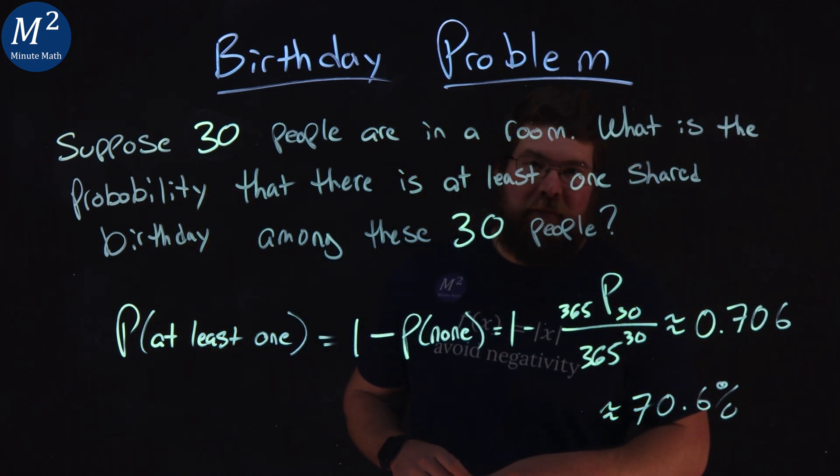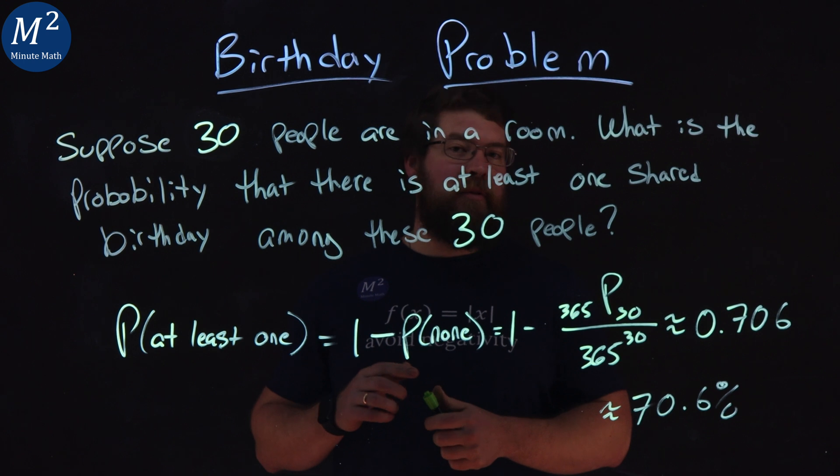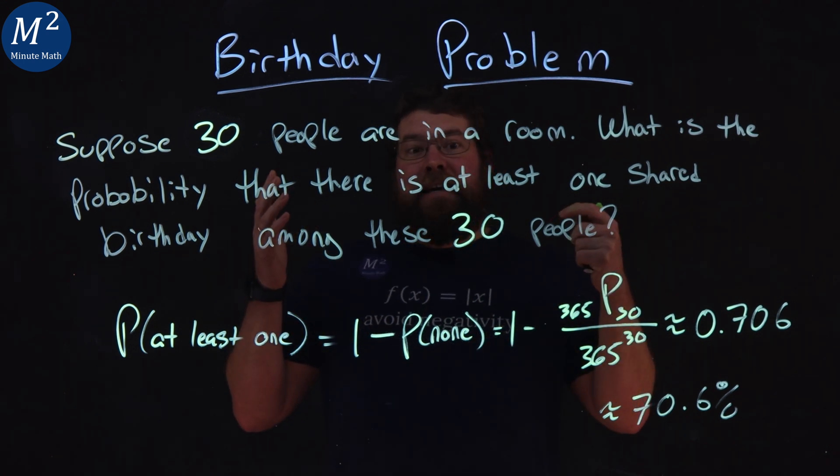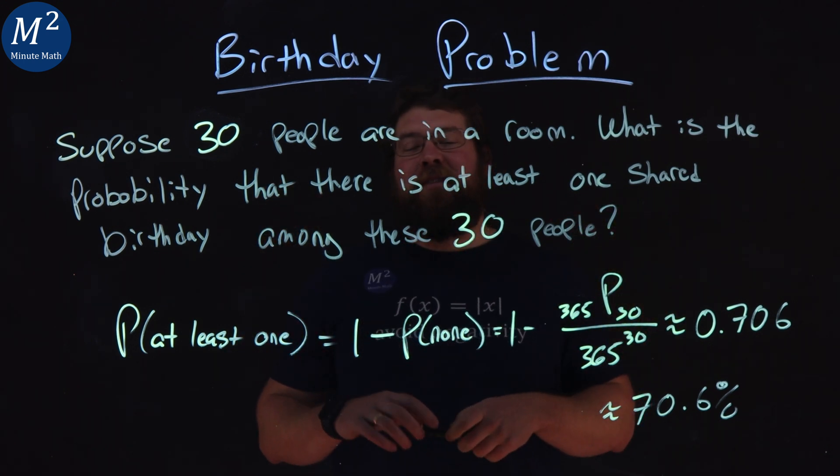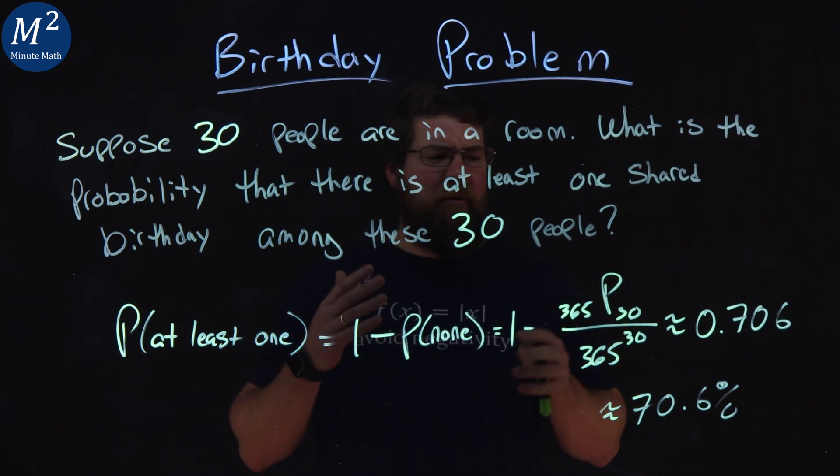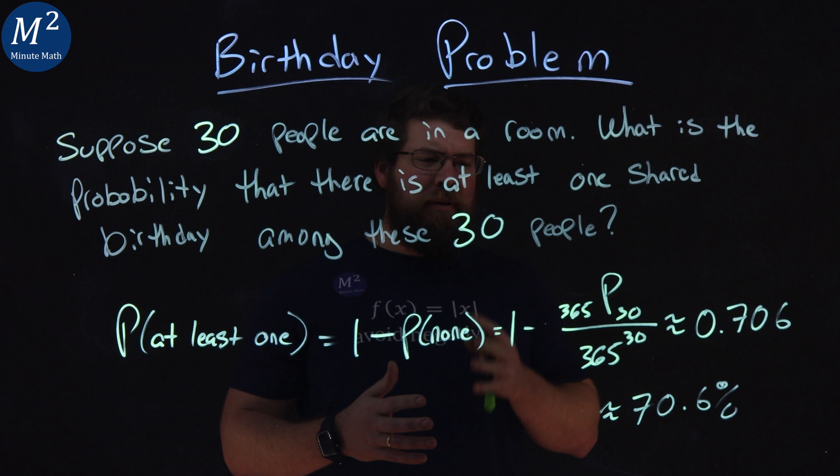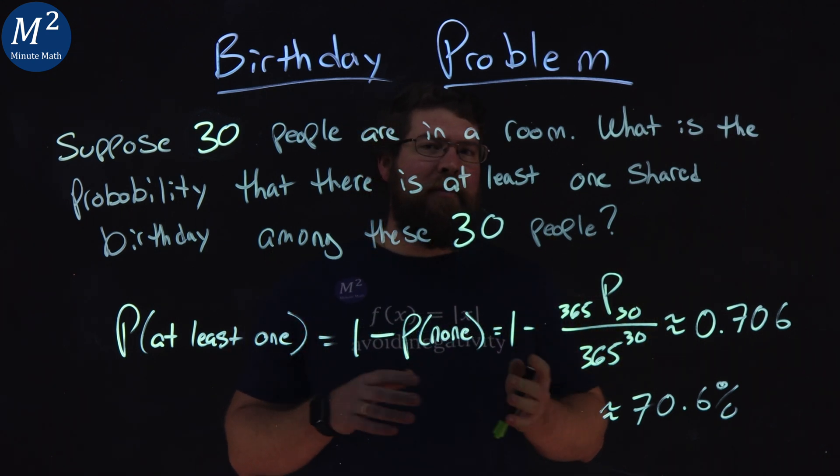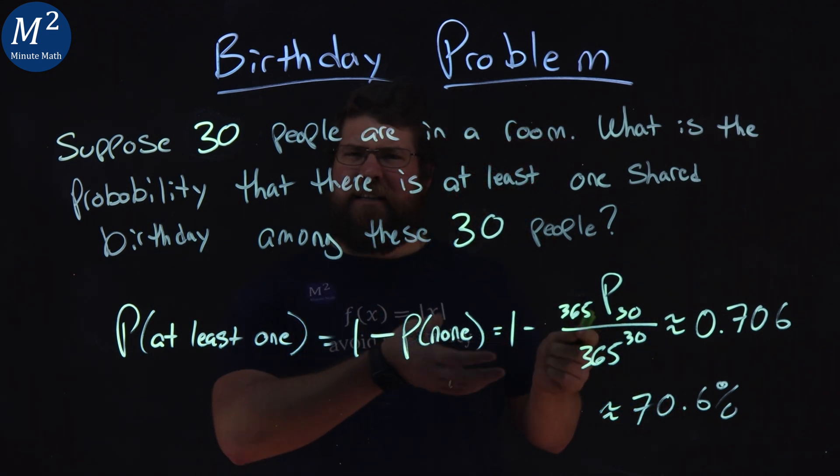So it's kind of a cool bet if you have 30 people in a room or hanging out at a party with 30 people. There is a 70% chance that at least one share the same birthday in that group. But it's kind of mind-blowing. I never really thought about that when I first learned about this birthday problem, that it would actually be that common.